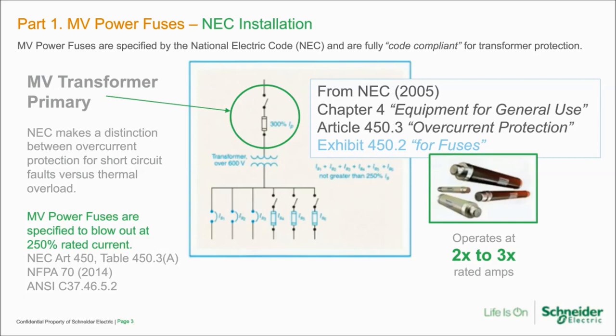The NEC chapter for medium voltage is actually in the chapter for general equipment — article 450.3 for overcurrent protection. NEC makes a distinction between the two types of overcurrent: short circuit versus thermal overload. Thermal overload is like Clark Griswold's Christmas lights scenario, while short circuits involve things like lightning strikes. MV fuses are specified by NEC to be fully compliant for transformer applications. The thing to note is that power fuses blow between 250 and 300 percent of their rated current — this is how they work physically and how the code intends them to be applied.